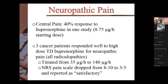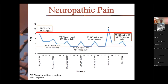One study showed a 40% response rate to central pain with buprenorphine. Another cancer study looking at three patients with cancer responded well to radiculopathies as well. In a transdermal study, patients started at 35 micrograms and went up to 140 — doses more commonly used in Europe, as our transdermal patches only go to 20 micrograms here in the United States — and their pain scale dropped from 8–10 down to 3–5, with pain reported as satisfactory.